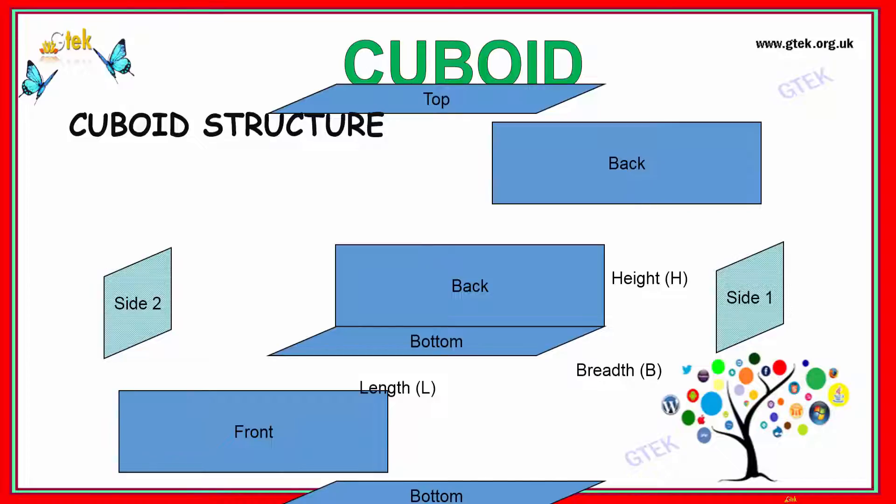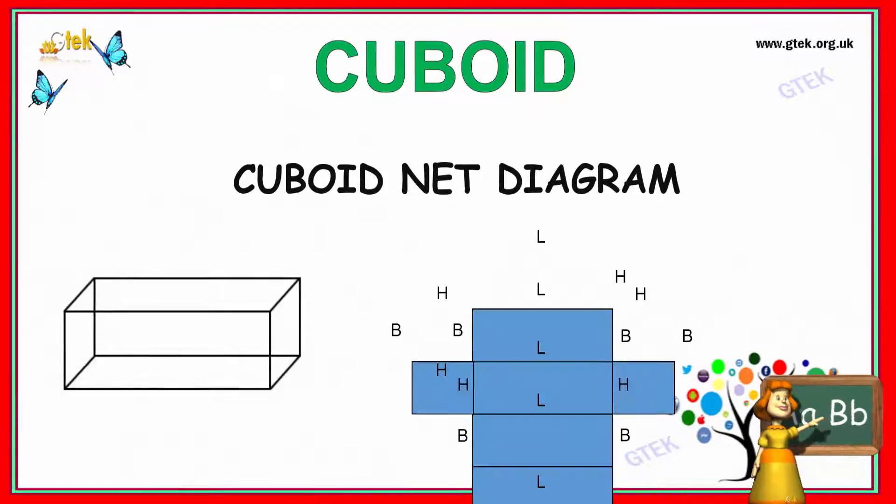Now we are talking about cuboid. Cuboid is the structure of a cube but the length and width is changed. It will have different length and width. This is the cuboid.